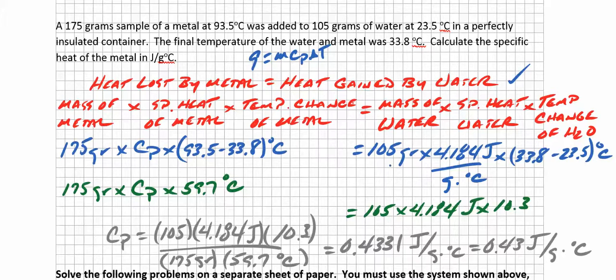Now let's calculate the amount of heat gained by the water. We had 105 grams of water times 4.184 joules per gram per degree Celsius. That's the specific heat of water. I'll give that to you, by the way. Times the change in temperature of the water was, it was 33.8 minus 23.5. Remember, the water initially was 23.5 degrees Celsius, but eventually, both the metal and the water ended up at 33.8 degrees Celsius.